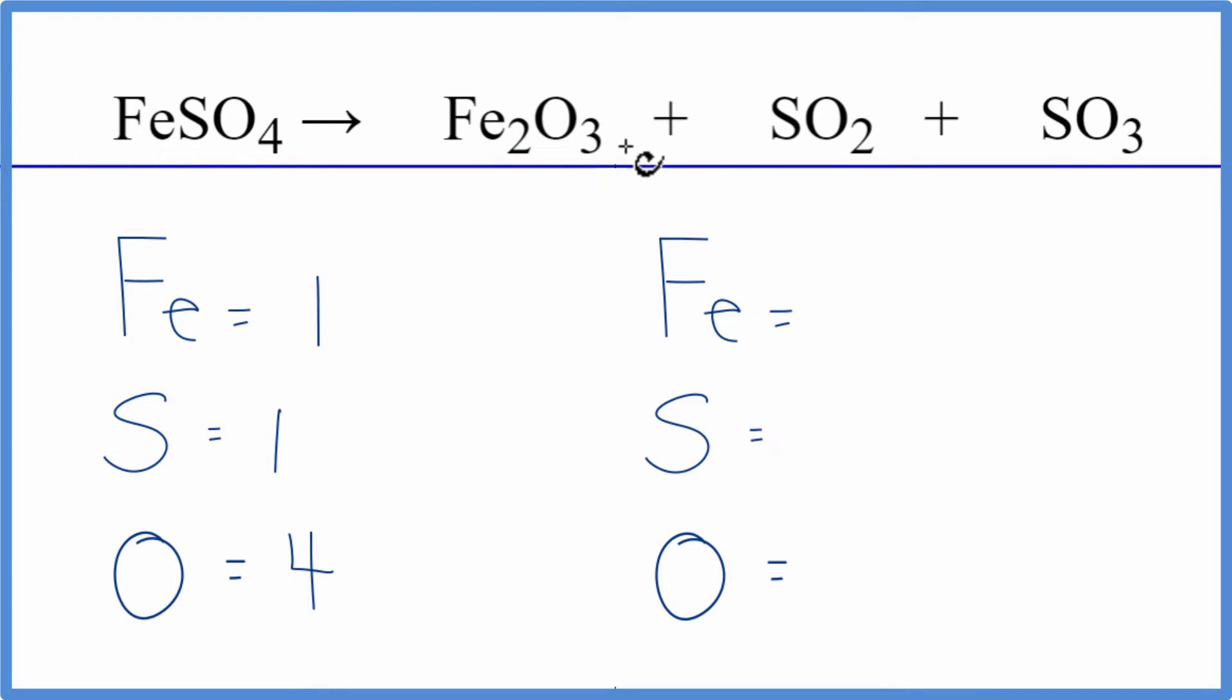On the product side, we have iron, two of those. We have one sulfur. And be careful, we have another one here. So we have two sulfur atoms. And then the oxygens, we have three plus two. That's five plus three. We have eight of those.